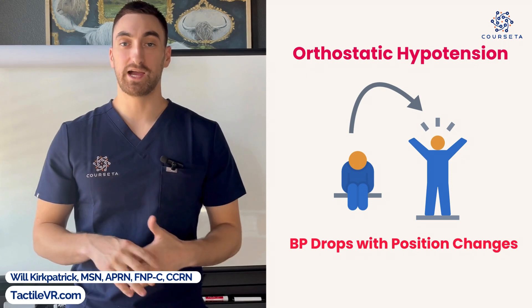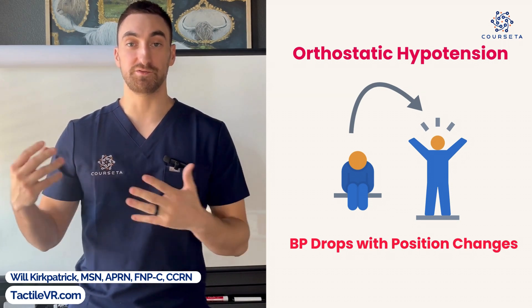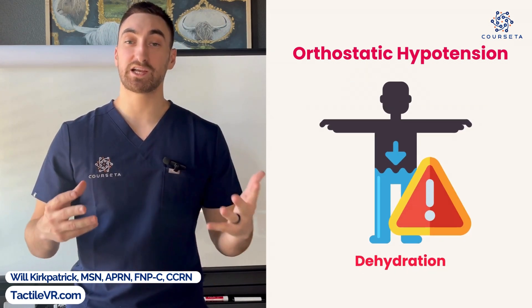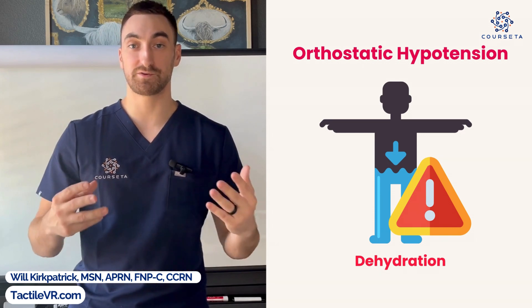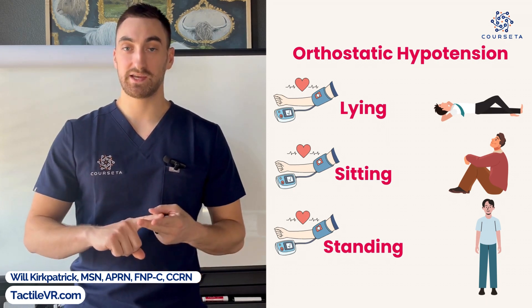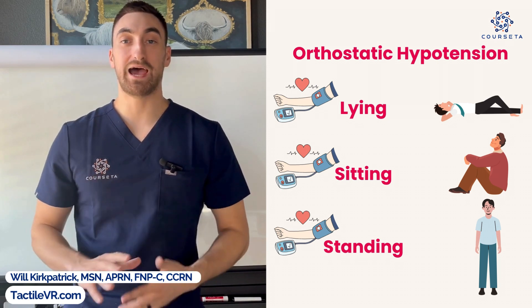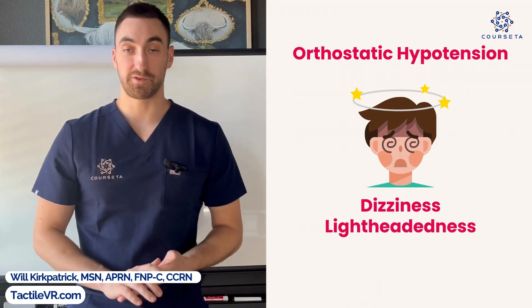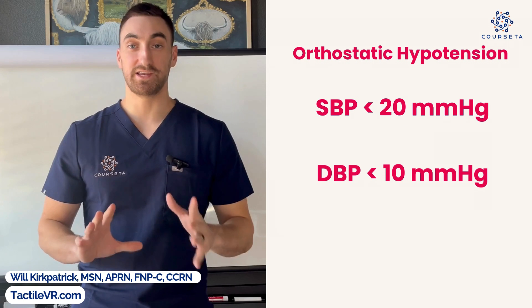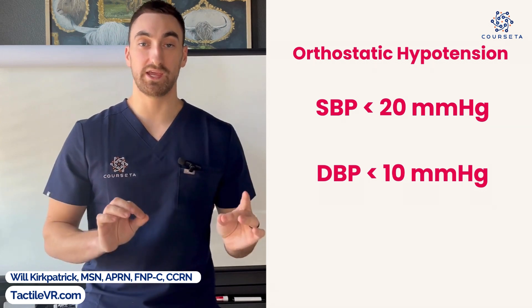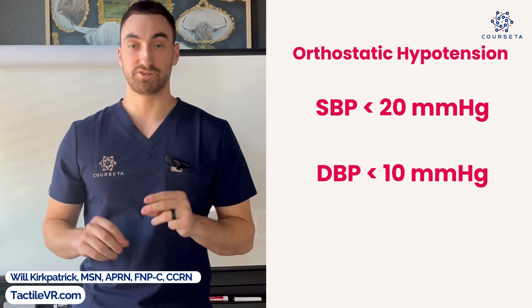A big concept for blood pressure is orthostatic hypotension — when a patient changes position too quickly, their blood pressure drops and heart rate increases. It is very common in geriatric patients who are often dehydrated due to a deficient thirst mechanism. To assess it, check blood pressure in three positions: lying, sitting, and standing, measuring one to three minutes after each position change. Orthostatic hypotension is defined as a systolic drop of more than 20 mmHg and a diastolic drop of more than 10 mmHg. Signs and symptoms include dizziness and lightheadedness.